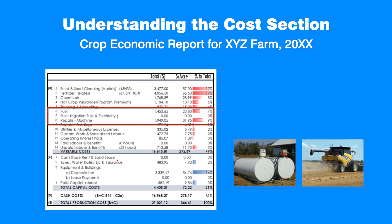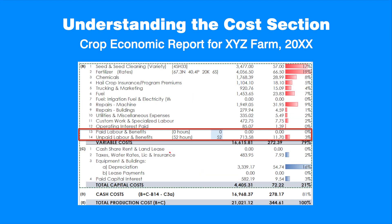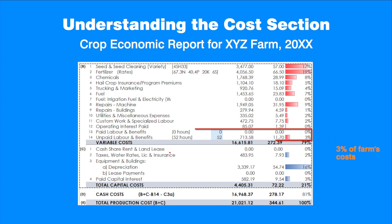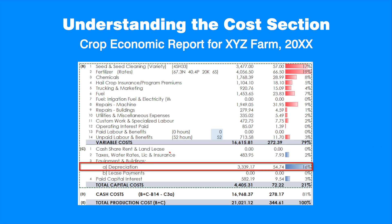The fuel and repairs machinery account for 16% of the farm's costs, or $55.78 per acre. Labor costs are the sum of paid and contributed labor. The contributed labor is valued at an opportunity cost hourly wage as declared by the producer. In our example, the total labor cost is $11.70 per acre, or 3% of the total production costs. The depreciation costs for both buildings and equipment contributes substantially to the total production cost — in our example, it accounts for 16% of the farm's costs, or $54.74 per acre.